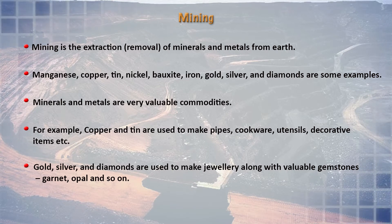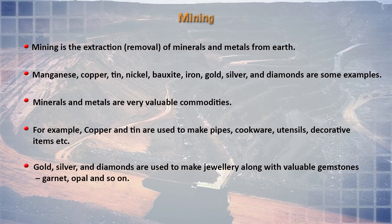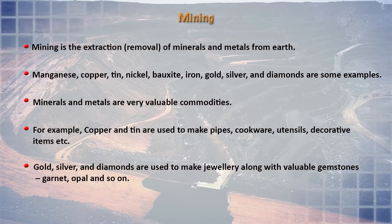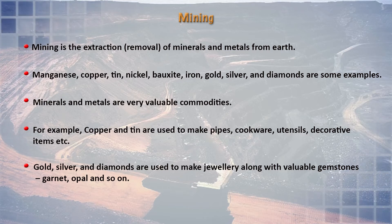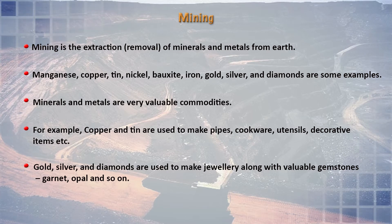Copper and tin are used to make pipes, cookware, utensils, and decorative items, which are quite expensive. Gold, silver, and diamond are used to make jewelry items. Certain gemstones such as garnet, opal, and other valuable gemstones are also used. Even coral is used, and coral reefs are getting degraded due to the extraction of pearls from oysters. All these are involved with environmental degradation because mining activities are involved.